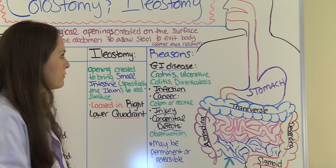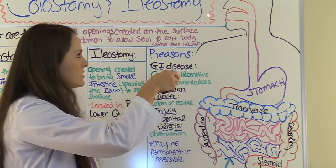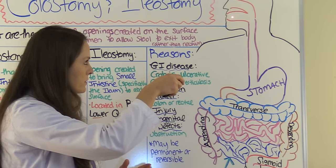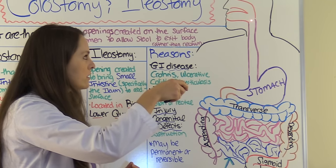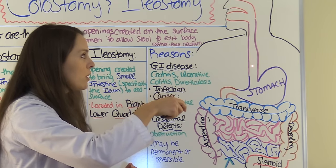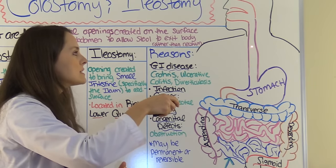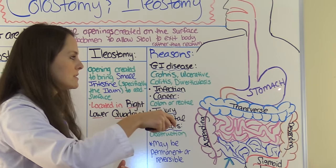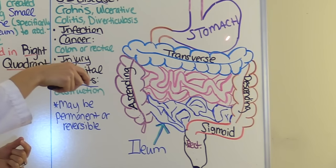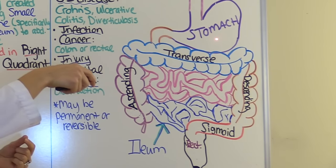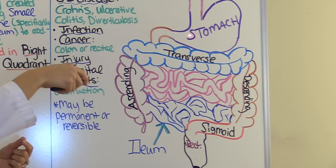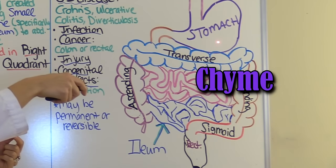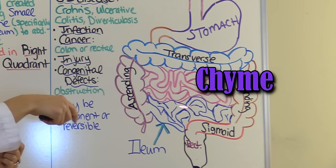Whenever you eat food, digestion starts in the mouth. You eat food, chew it up, your saliva mixes with it breaking down the food a little bit, and then you swallow it down through a tube called the esophagus. The esophagus uses peristalsis to get that food down into your stomach, which is like a pouch. In the stomach, gastric acid mixes with your food, breaks it down, and it turns into a substance called chyme.